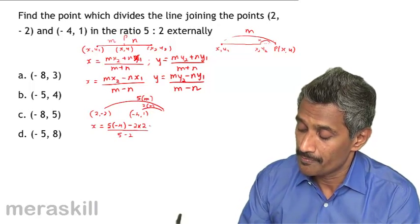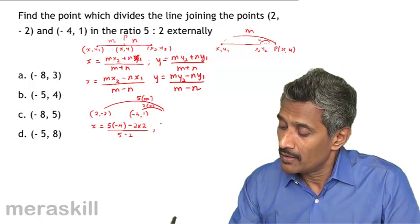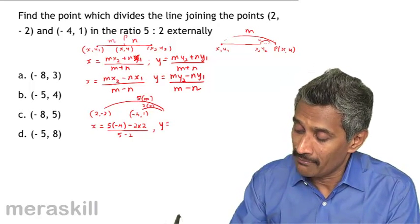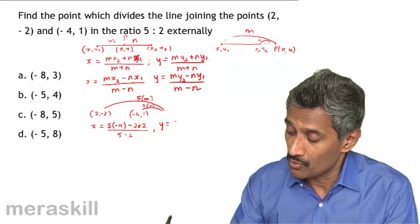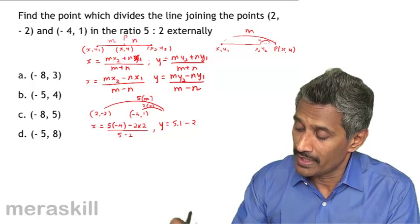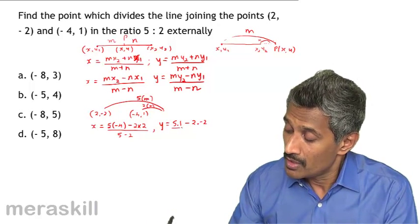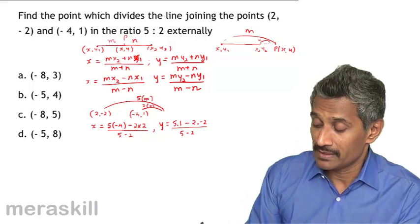And y would be equal to M, that is 5 into 1, minus N, that is 2 into -2, upon 5 minus 2, M minus N.